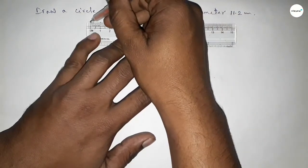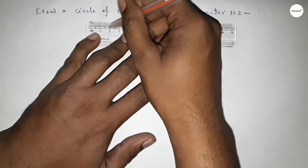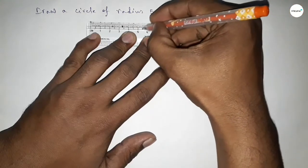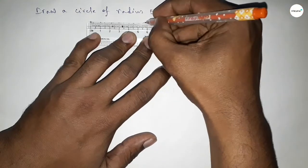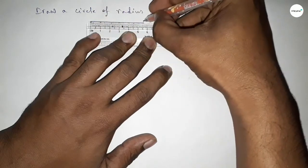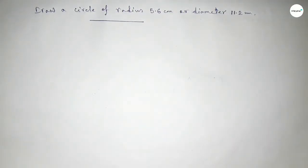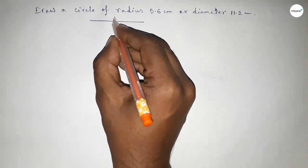So this is starting 0, 1, 2, 3, 4, 5, and this is 5.5 and this is 6, so 5.6. And we know that radius of a circle is half of diameter of the circle, so this is 5.6 centimeter.